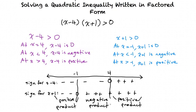There is also no solution at x equals negative 1 and positive 4, because the function is equal to 0 at those points, but it should be greater than 0. So our final solution is x is less than negative 1 and x is greater than 4.